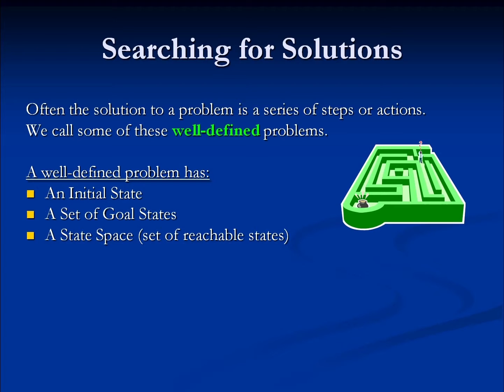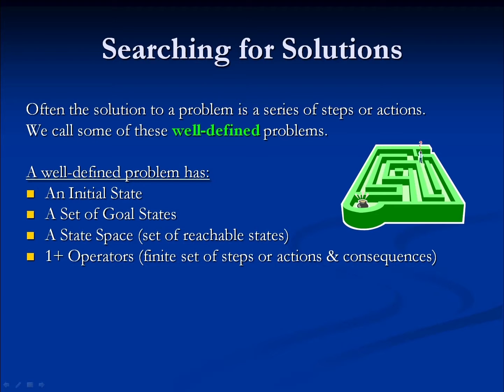Finally, we have to have one, and often more than one, operators. An operator is how we get from one problem state to another problem state. By applying an operator, we move through the state space. In a game of chess, the operators are moves that we make with pieces.